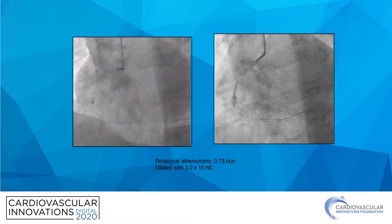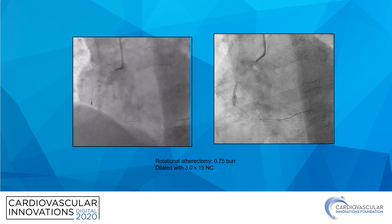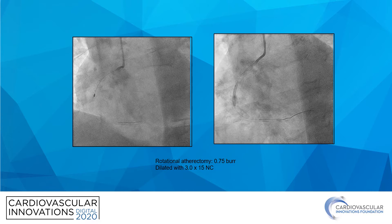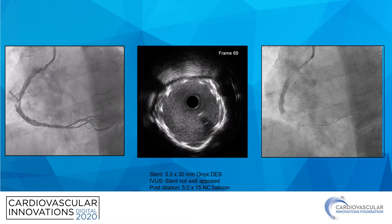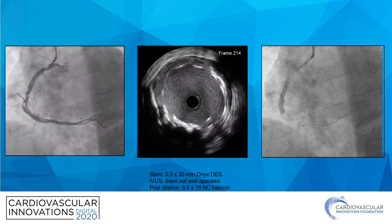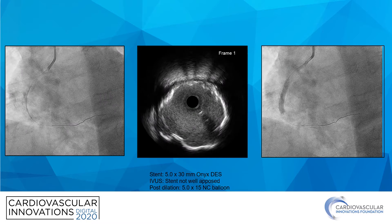After this, it was smooth sailing. I did a 0.75 rotational atherectomy and dilated with a 3.0 by 15 NC balloon. Here's the stent — it was underexpanded, so I post-dilated with a 5.0 by 15 NC balloon.